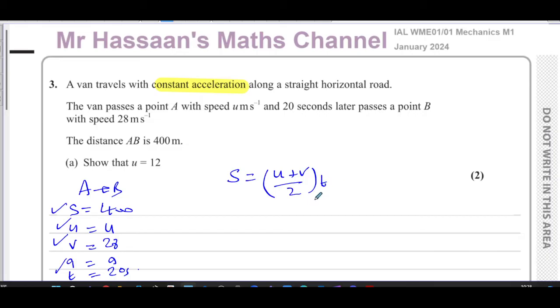S equals U plus V over 2 times T. This formula is the average speed times time equals the displacement. It's like the area under the velocity time graph, which gives you the displacement, like the area of a trapezium. So S equals 400, we want to find what U is.